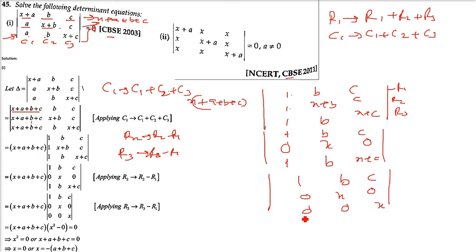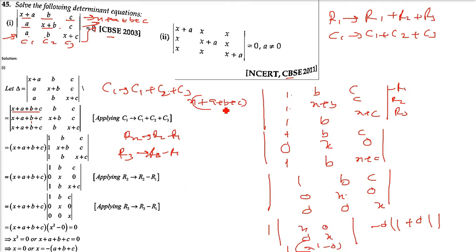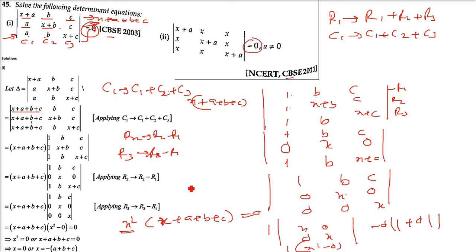So we got two zeros in the first column and two zeros in the other places. Now let us open it using the first column: 1 into something, minus 0 into something, plus 0 into something. So it will be X, 0, 0, X — that is X² minus 0, which is X². We initially took X+A+B+C outside, so the result is X² × (X+A+B+C). Since it equals 0, either X = 0 or X = −A − B − C.